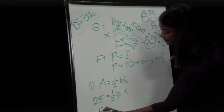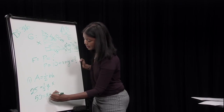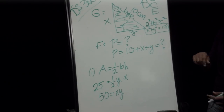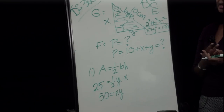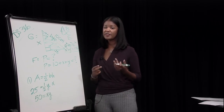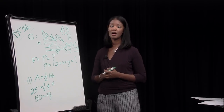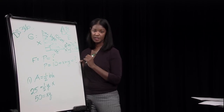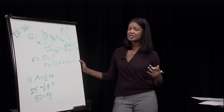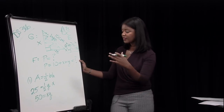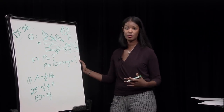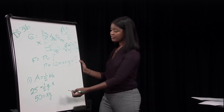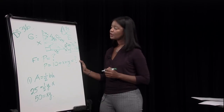We don't actually need to solve the equations — we only need to recognize that with two equations and two variables, we have enough information to solve. We stop with confidence and declare statement one sufficient. We eliminate B, C, and E. This is the key skill in data sufficiency: stopping at the point where you know you can solve, without wasting time actually carrying out all the calculations.